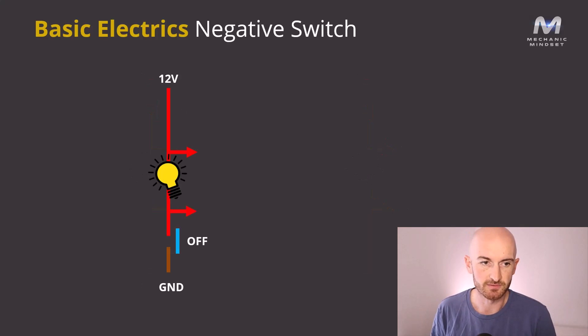Then we get to the negative switch. This is where you've got to be careful. The circuit is switched off, and we've got a switch on the ground side. So when it's switched off, we're going to get 12 volts on both sides of that bulb. Now, it's really important that you understand that if you measure 12 volts on the ground side of a circuit, just make sure that you've got it switched on.